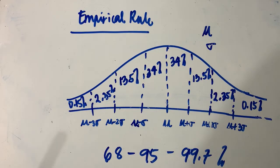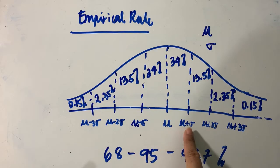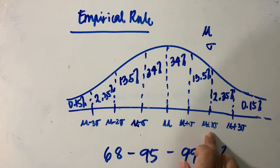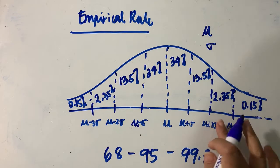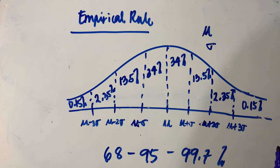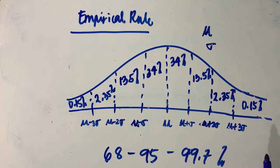Our main concern will be the intervals along the horizontal axis. One standard deviation above the mean is mu plus 1 times sigma. Two standard deviations above the mean is mu plus 2 times sigma. Three standard deviations to the right of the mean is mu plus 3 times sigma. Now let us consider our example.